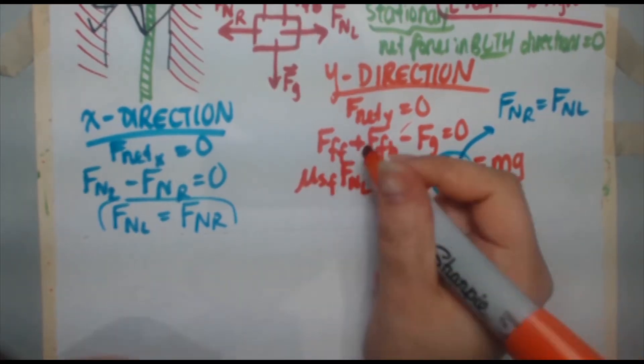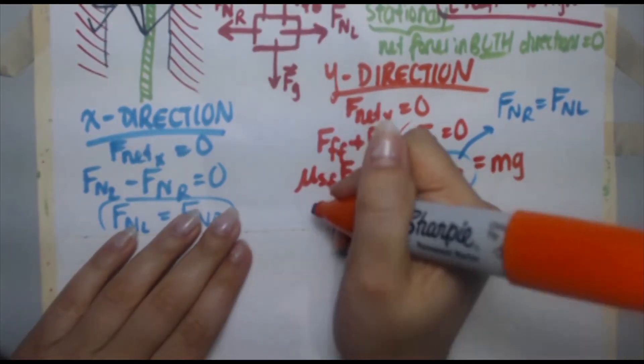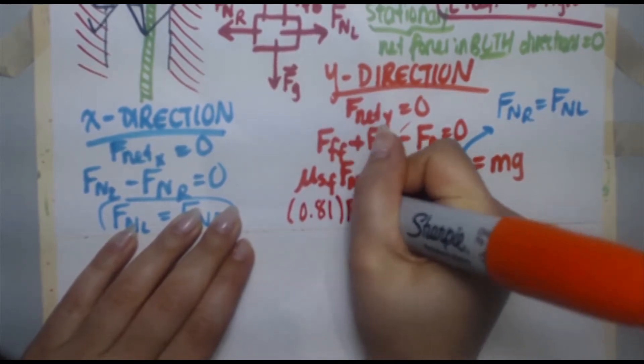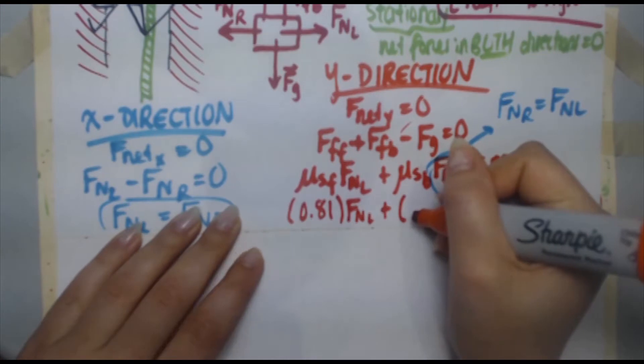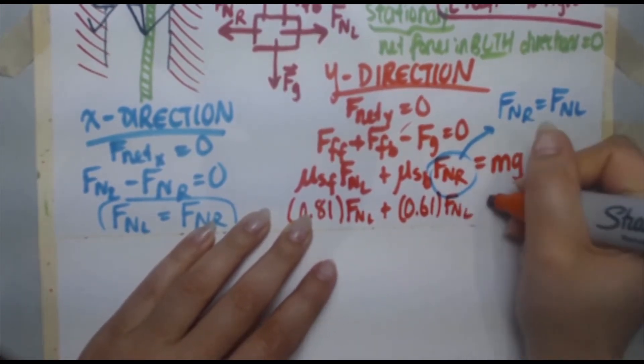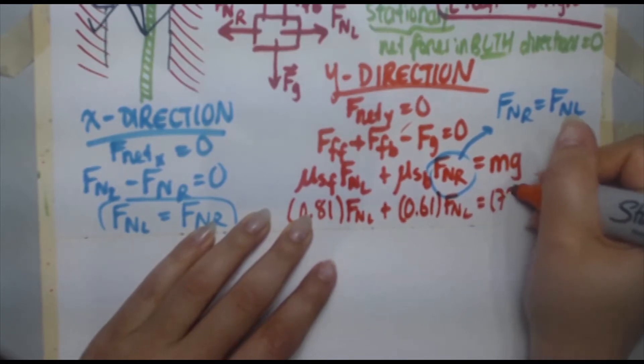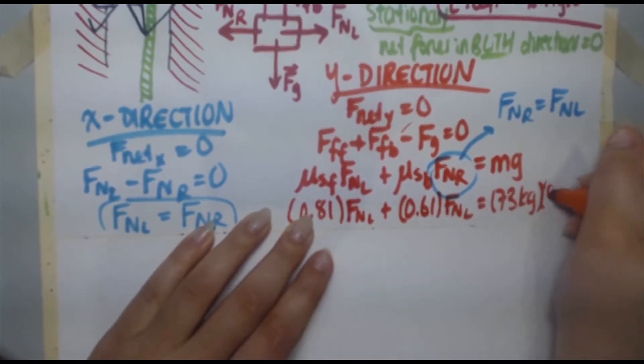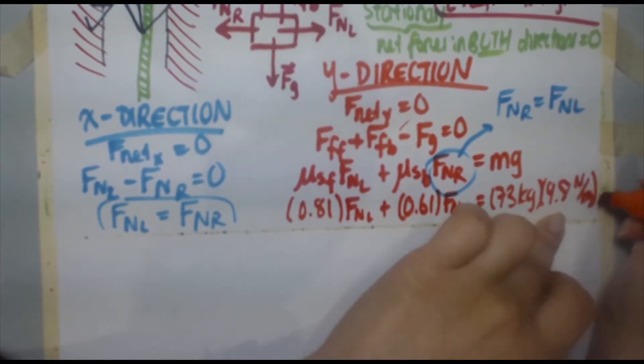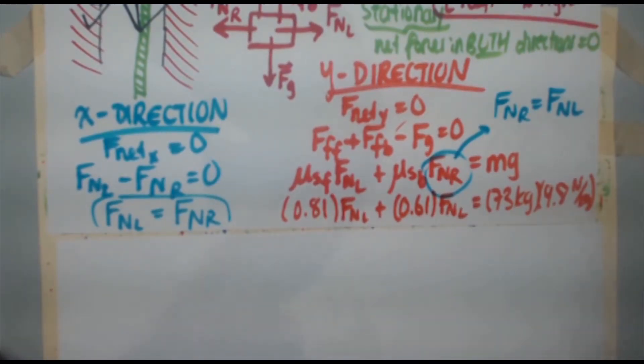I'm going to plug in my numbers too. The coefficient of static friction on the feet, they told us that to be 0.81 FNL plus coefficient of static friction on the back, 0.61 FNL equals mg, mass is 73 kilograms, g is 9.8 newtons per kilogram. Remember, you've got the two units there, newtons per kilogram or meters per second squared.